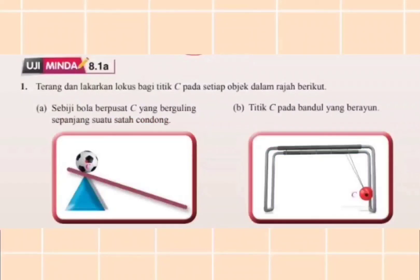Soalan B: Titik C pada bandul yang berayun. Maka, apabila bandul itu berayun, ia akan menghasilkan Locus yang berbentuk melengkung.